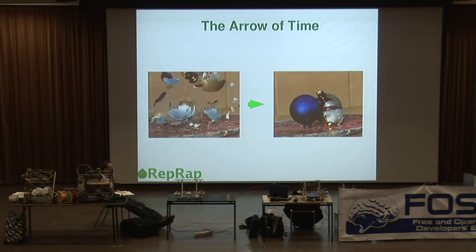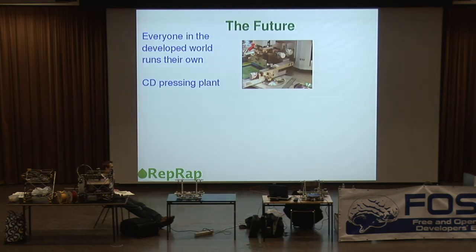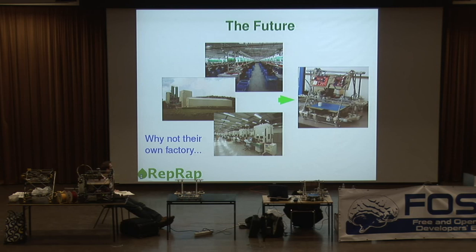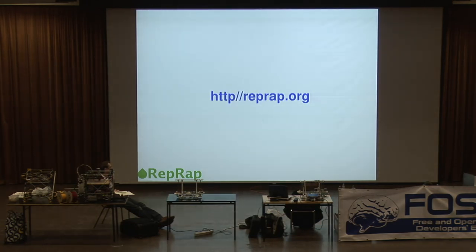Evolution occasionally makes the arrow of time appear to go backwards, by expending energy — so it doesn't break the laws of thermodynamics. Everything on the left gets replaced by the stuff on the right — you can all remember buying photographic film in rolls; I bet none of you can remember the last time you bought one. You all run your own CD pressing plant, your own photographic lab, and your own printing press, courtesy of these devices. Why shouldn't you run your own factory that makes more factories? That's the website — thank you very much indeed.